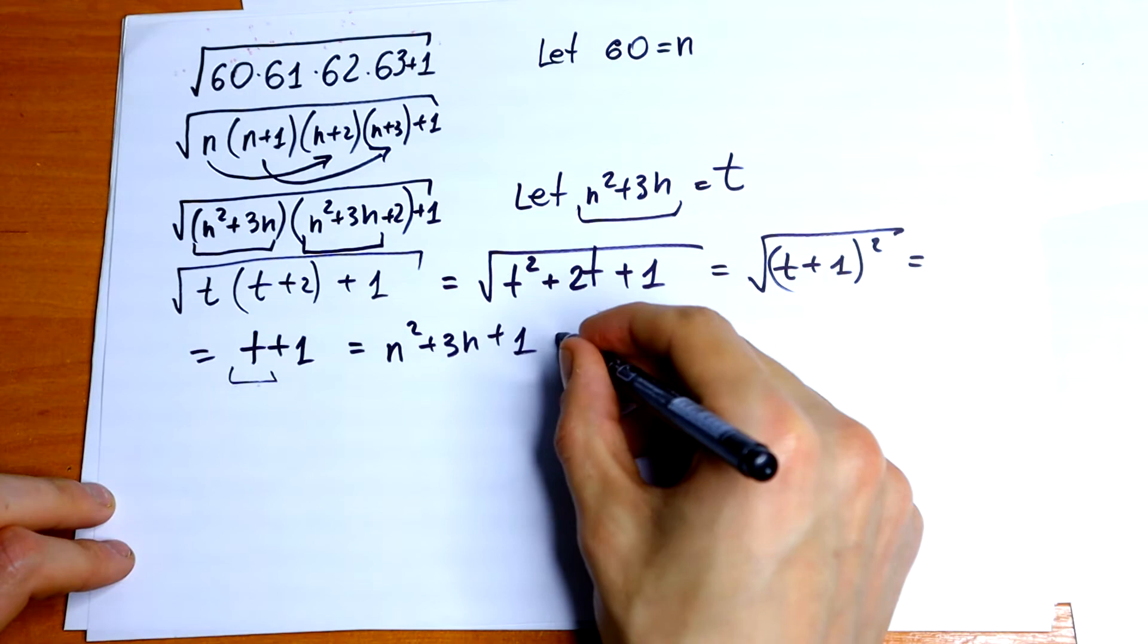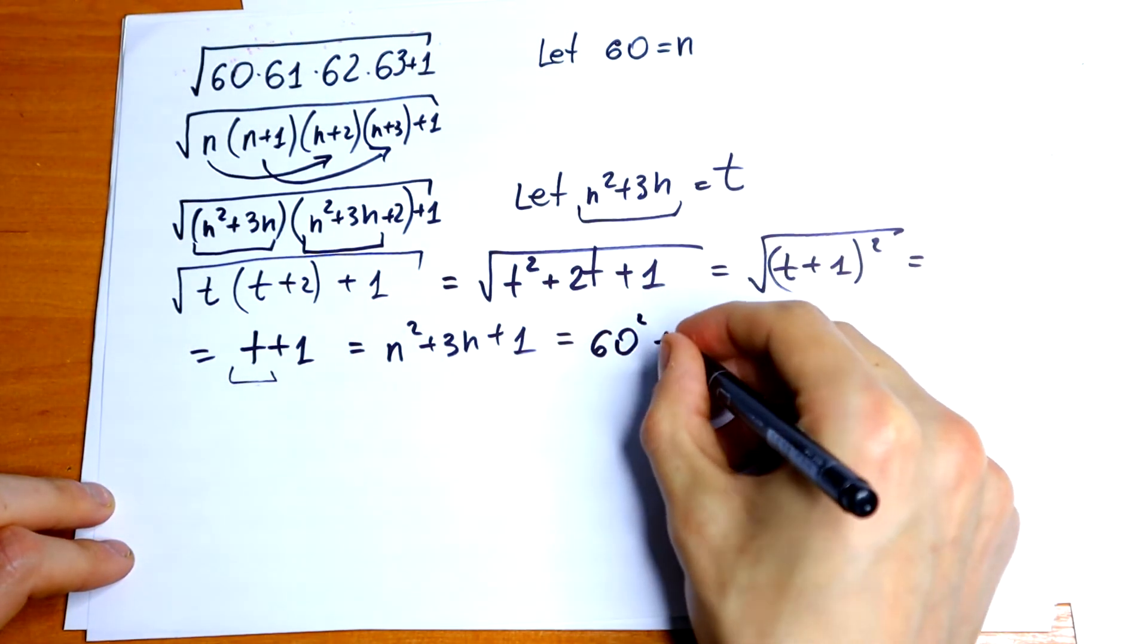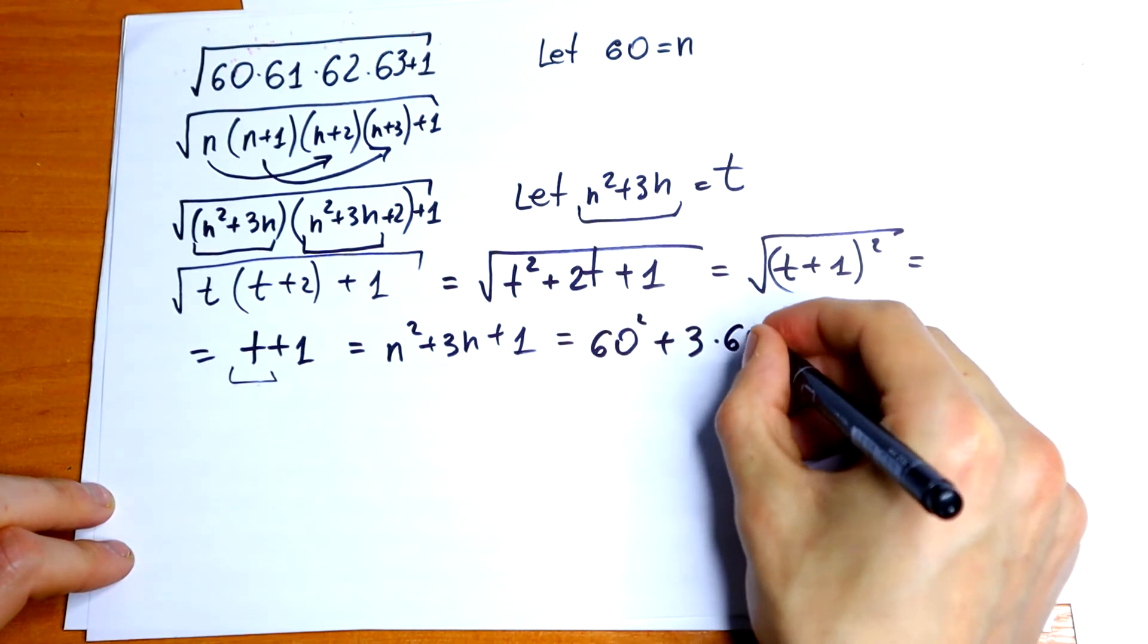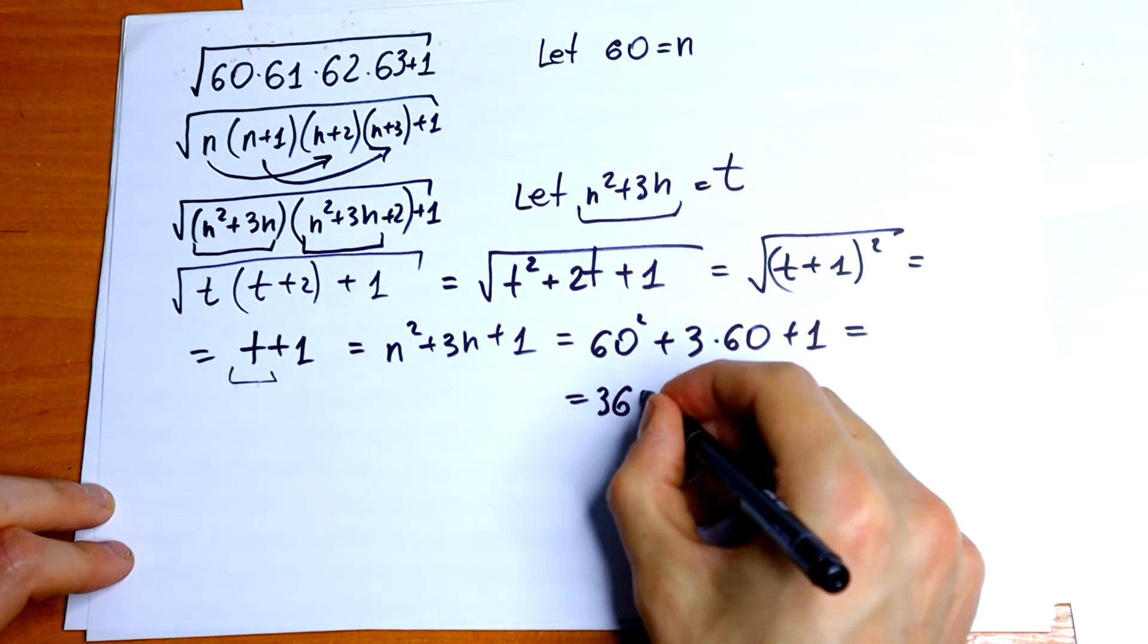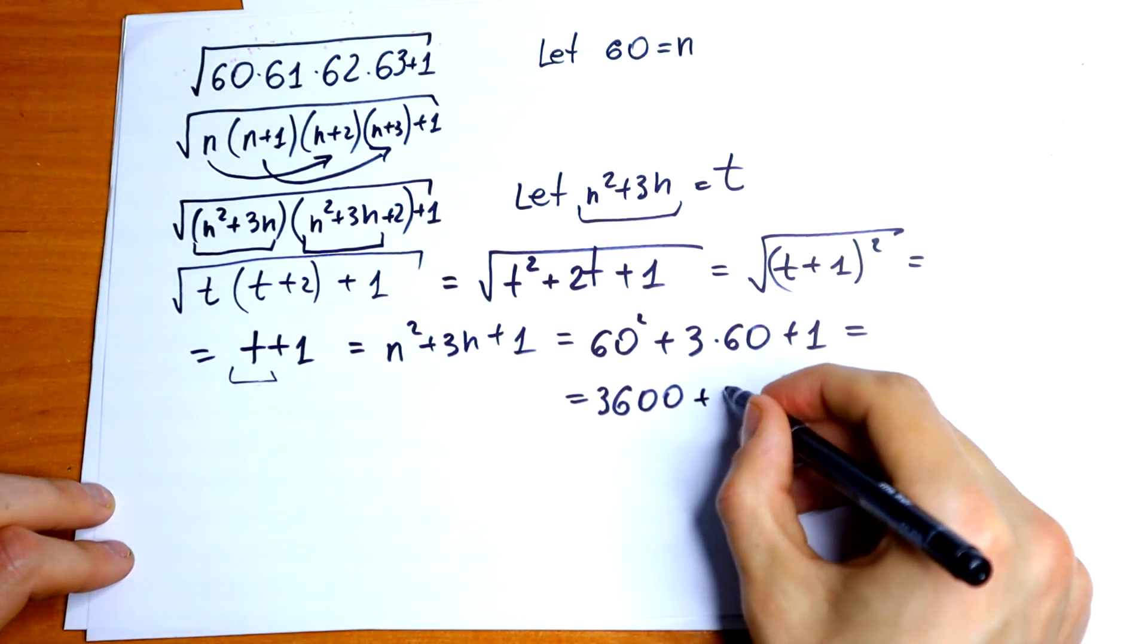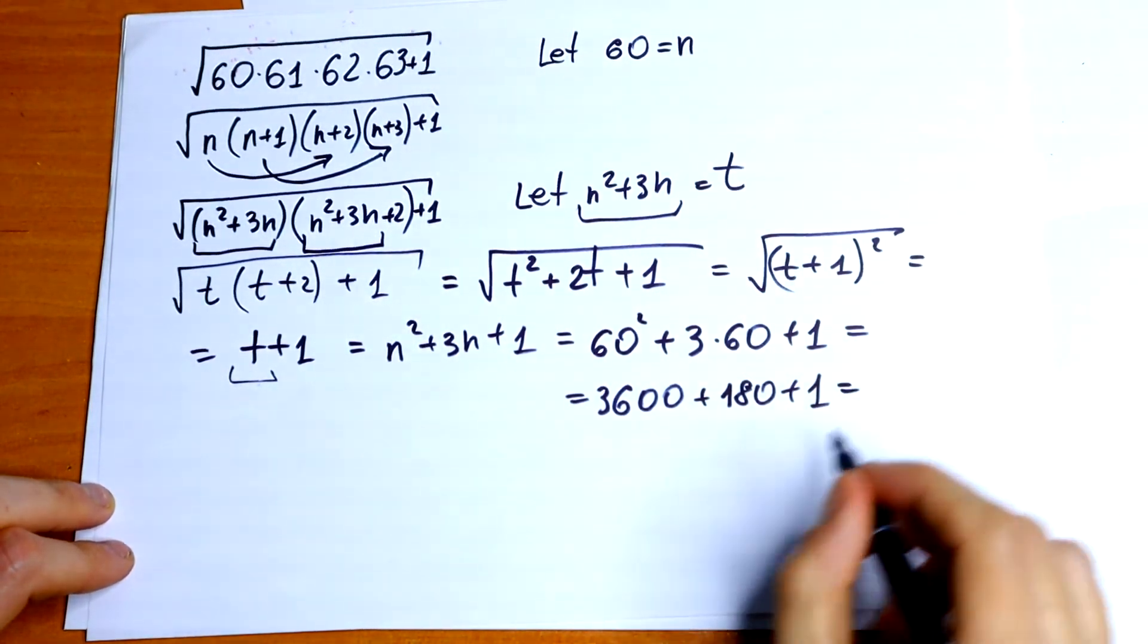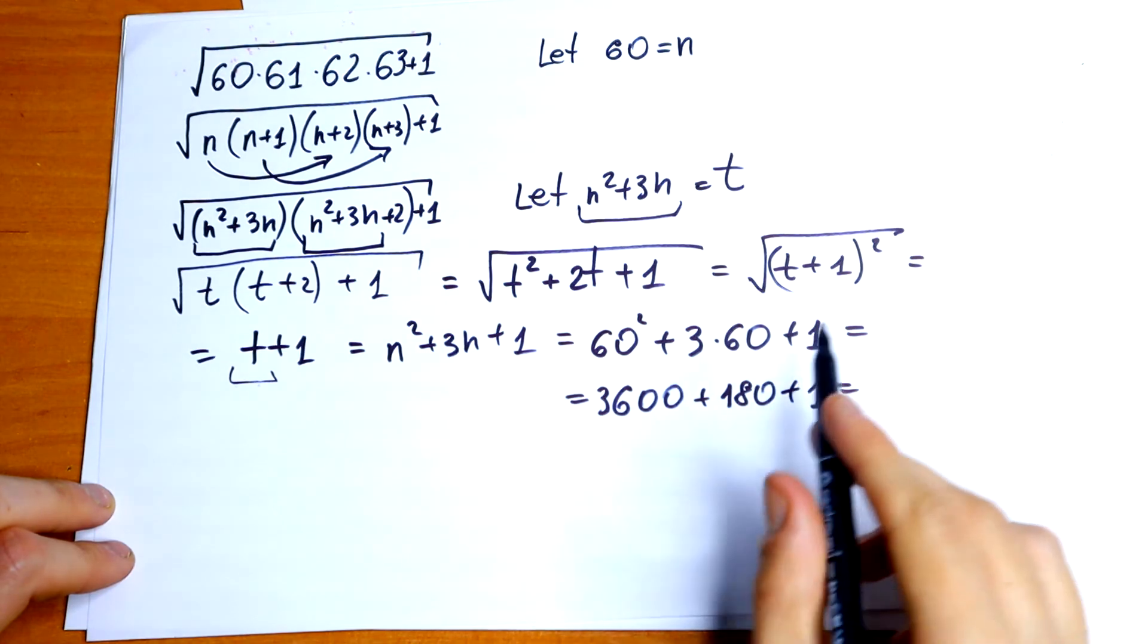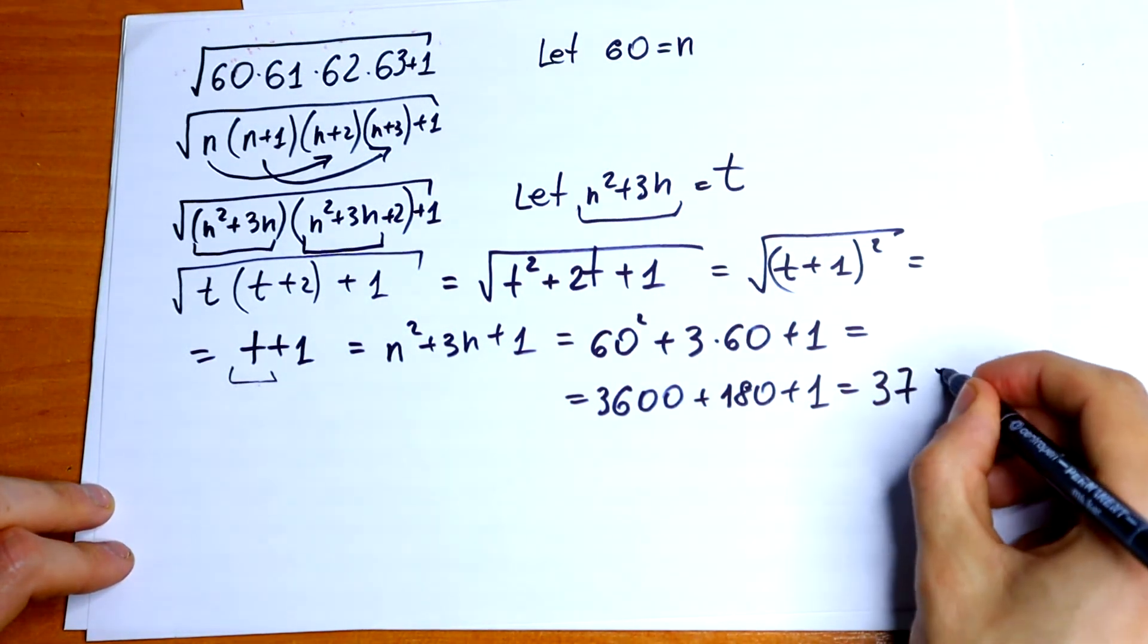n square plus 3n, 60 square plus 3 times 60 and plus 1. It will be equal to 3600 plus 180 and plus 1, and it will be equal to 3681.